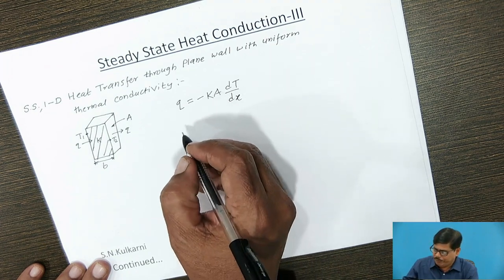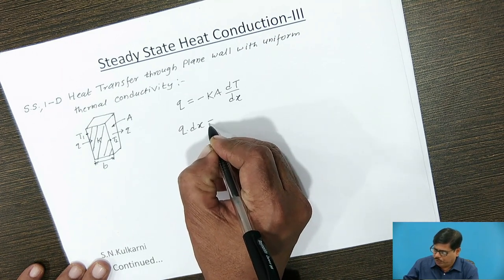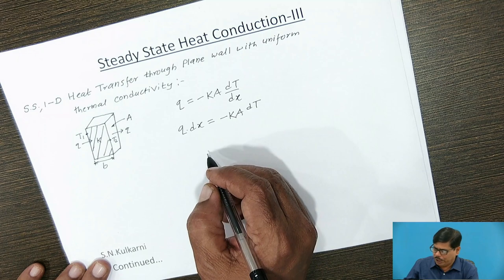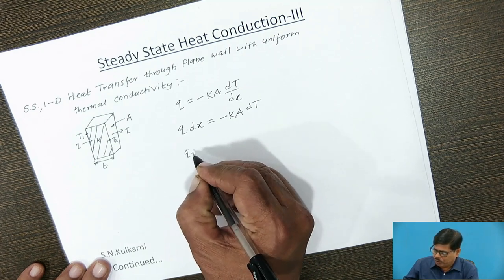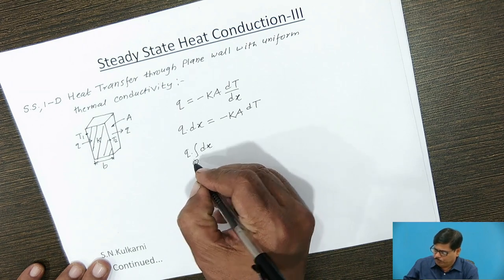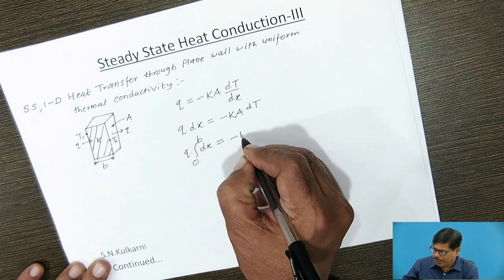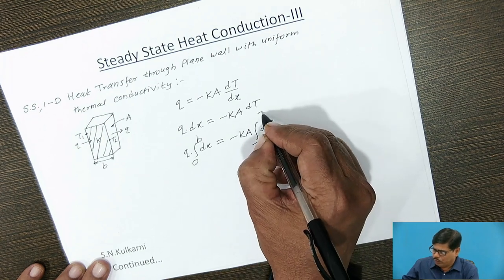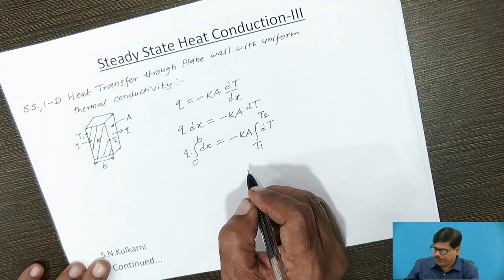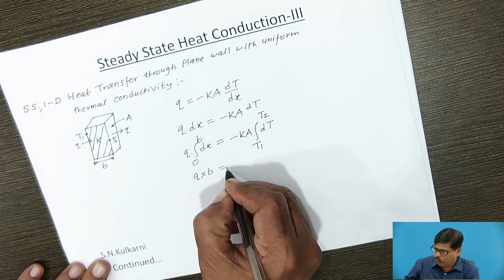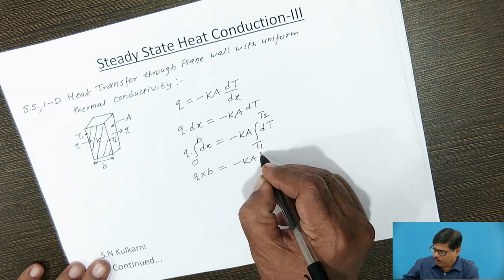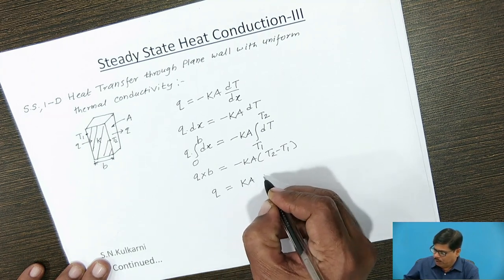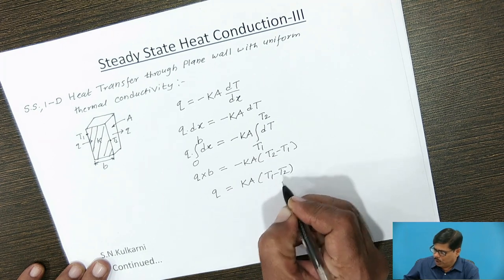Separating the variables, we can write this equation as Q dx = −KA dT. Integrating and putting the limits, we write Q times the integral of dx with thickness varying from 0 to B, equal to −K times A (area being constant, outside the integral), with temperature varying from T1 to T2. After integration, we get Q·B = −KA(T2 − T1). Rearranging, we get Q = KA(T1 − T2) / B.